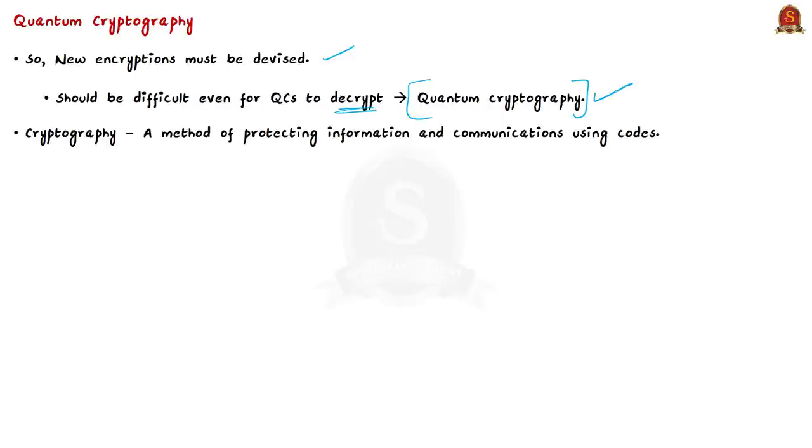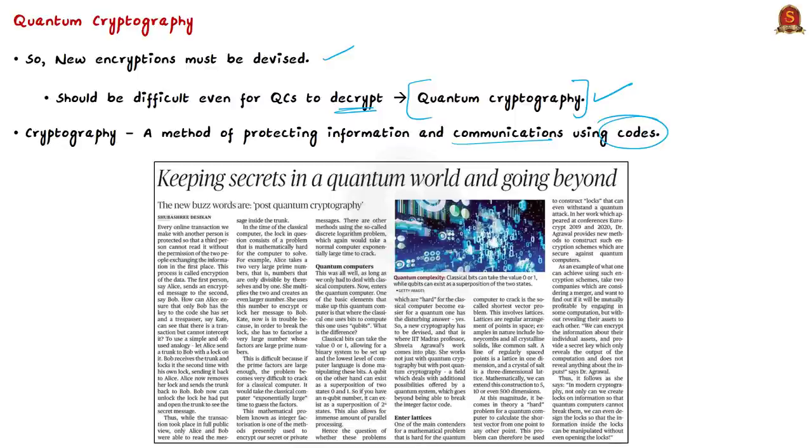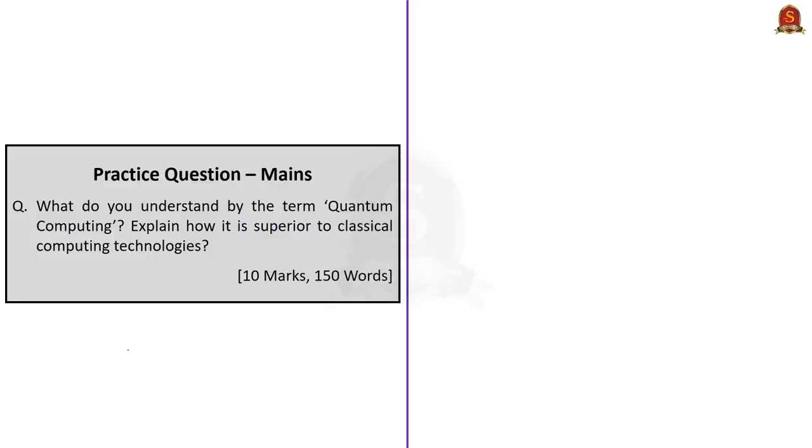A new encryption has to be devised which will be difficult even for quantum computers to decrypt, and this is what we call quantum cryptography. Cryptography is a method of protecting information and communications using codes, so that only those for whom the information is intended can read and process it. Today's news article says that the IIT Madras professor Shweta Agarwal is working in this direction. She works not just with quantum cryptography but also with post-quantum cryptography, which deals with additional possibilities offered by the quantum system. With this discussion, we saw what is quantum computing and how it is different from classical computing. We saw what is meant by encryption and also about quantum cryptography.